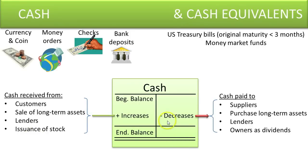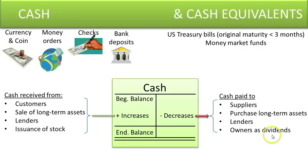The cash account goes down when you pay cash to your suppliers, pay for long-term assets, pay off lenders you borrowed from, pay dividends to your owners, or buy back your own stock. The point is: cash coming in increases it, cash going out decreases it.